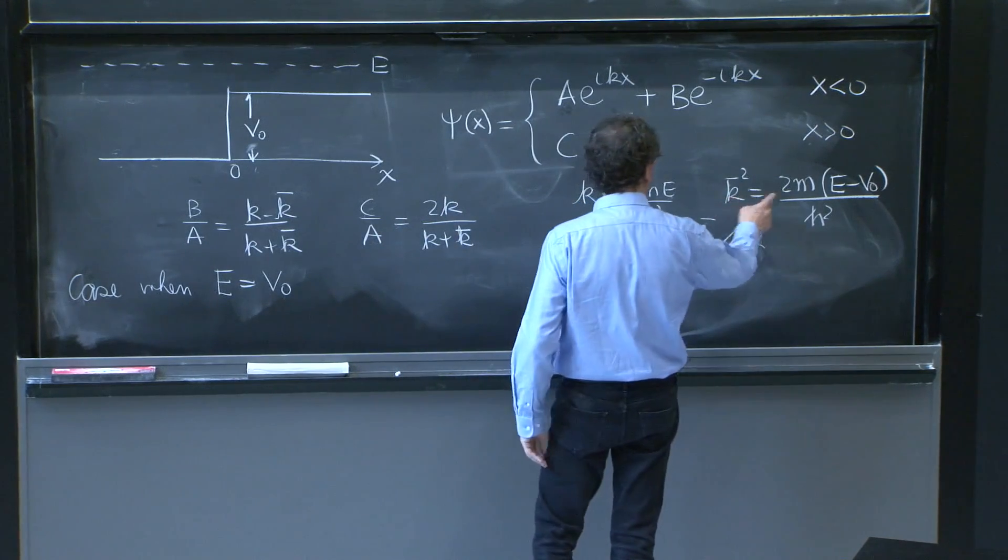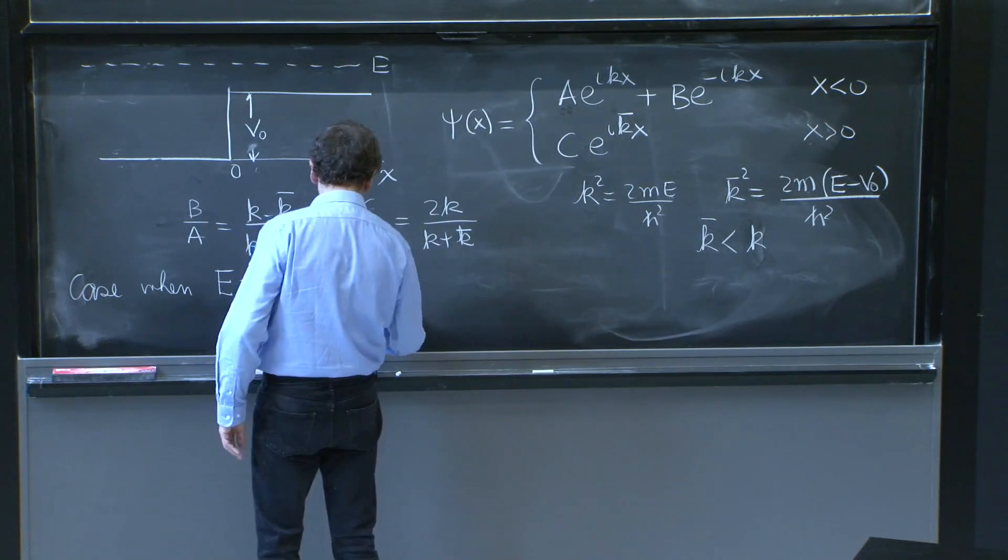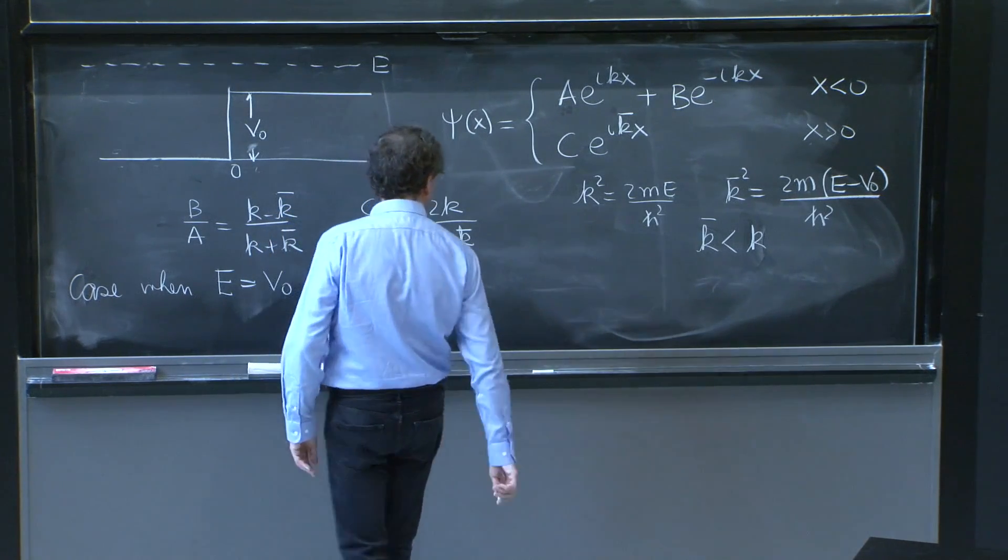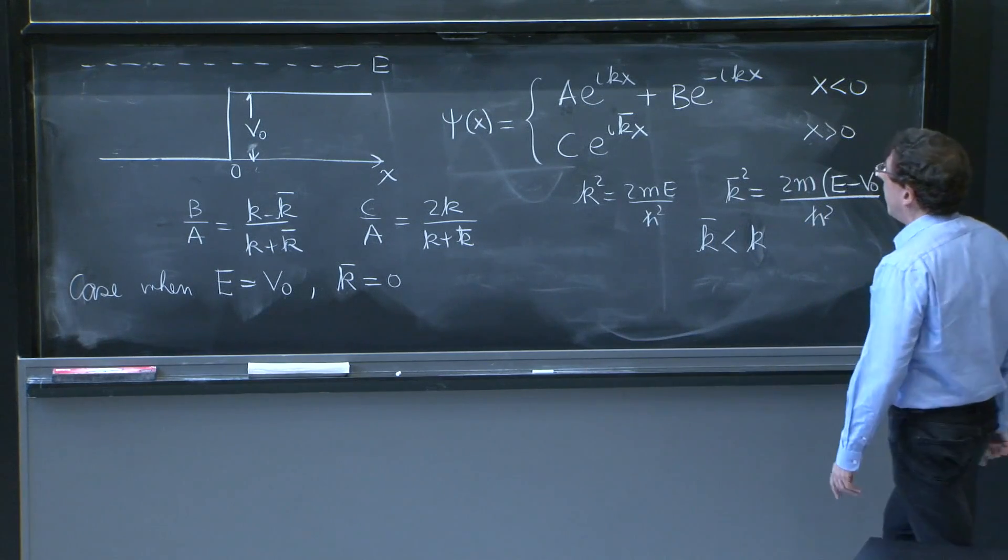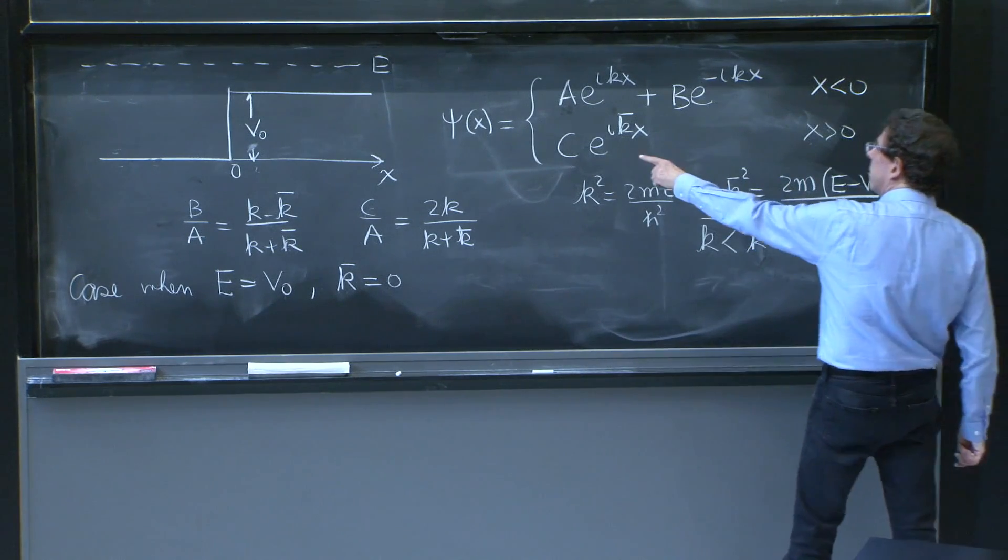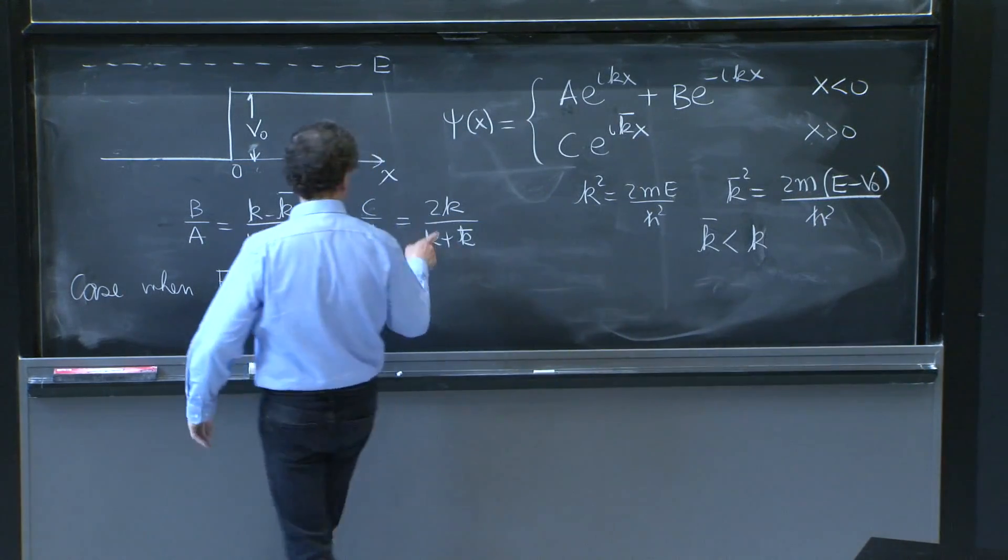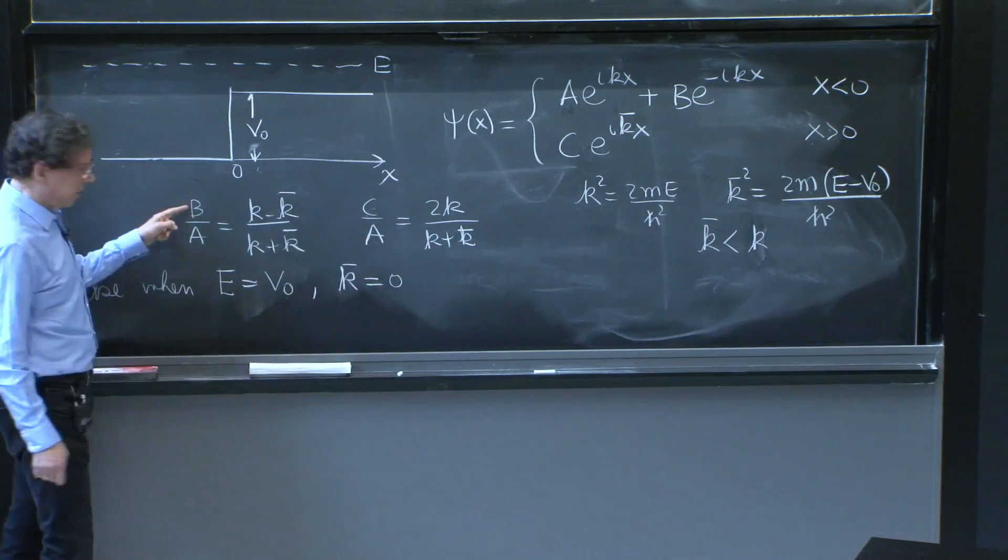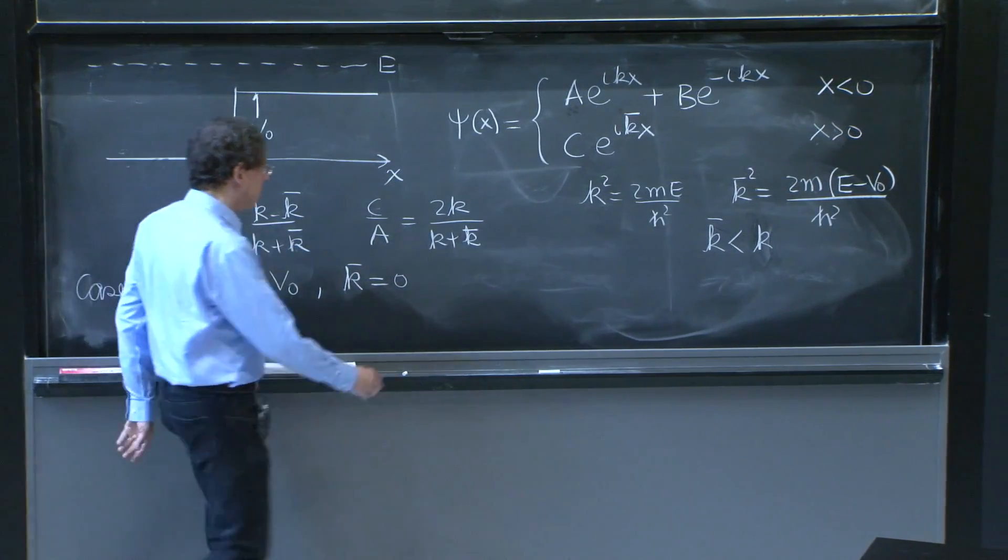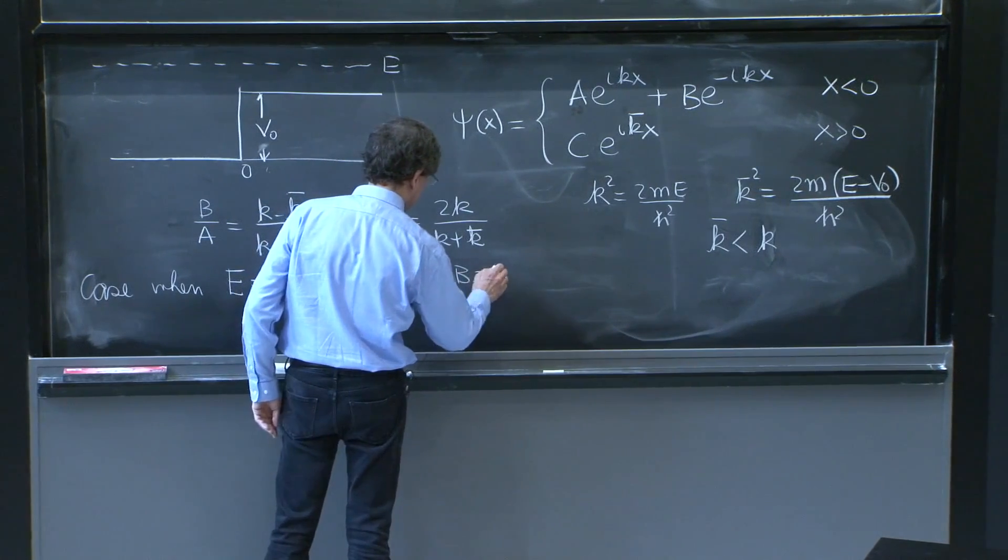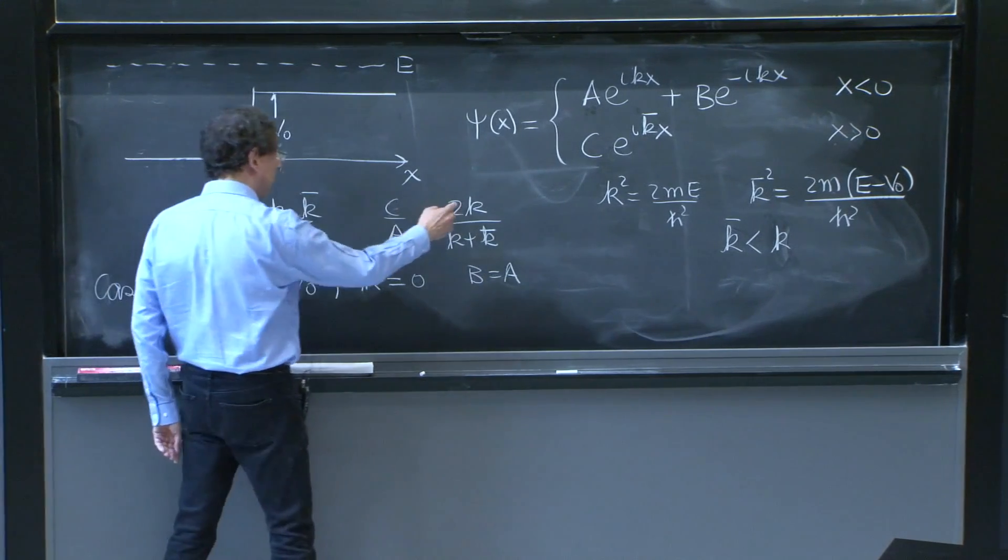Well, k̄ would be equal to 0. And if k̄ is equal to 0, you're going to have just the constant C in here. But if k̄ is equal to 0, first B is equal to A, because then it's k over k. So B is equal to A, and C is equal to 2A.